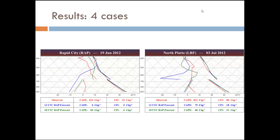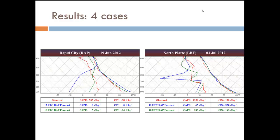The next two cases show the same thing — you're really seeing huge errors in moisture, which are leading your CAPE to be much, much lower than it should be and could cause forecasters not to anticipate convective initiation later in the day because the model is forecasting that essentially all this moisture is going to mix out. The only real temperature error is on that 19th of June case, where the temperature profile goes super-adiabatic at the surface and warms a little too much. But again, the biggest errors are really in that moisture profile.